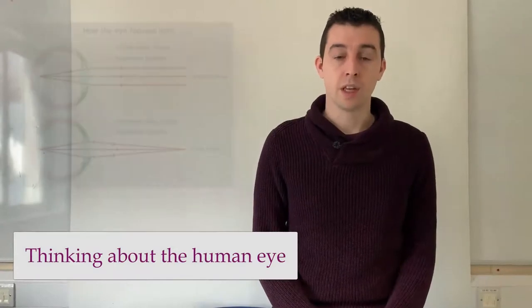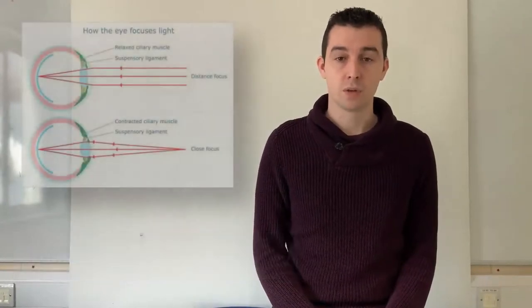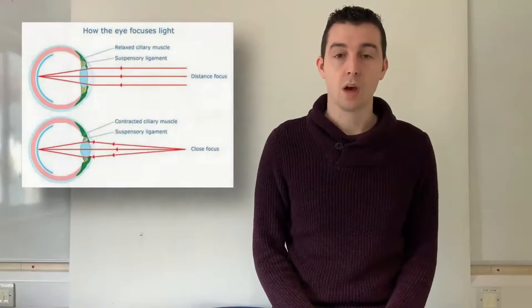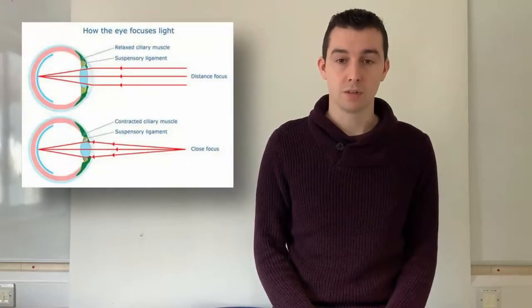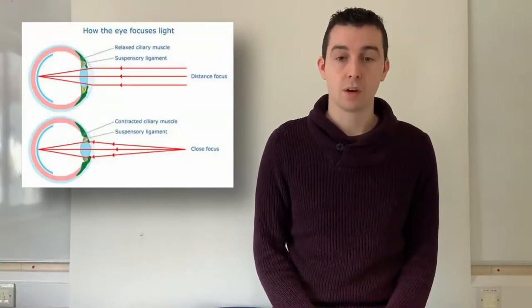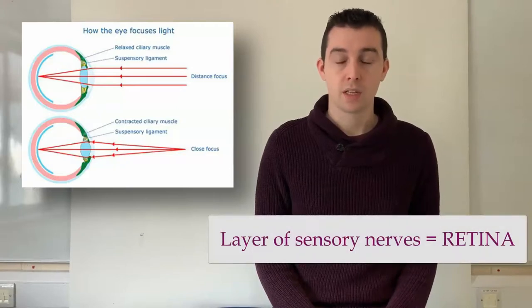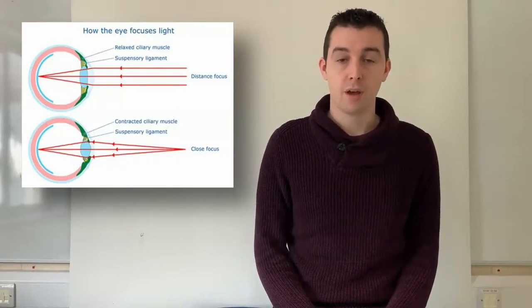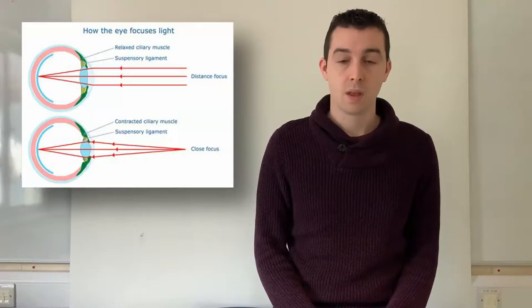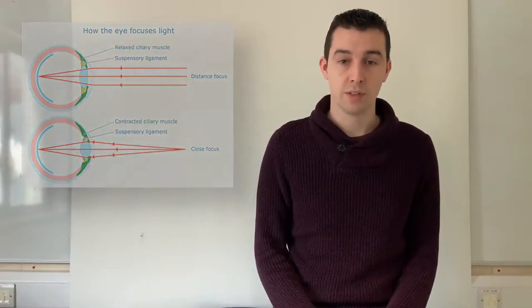Each of our eyes contains a convex lens which focuses the light coming into it onto the layer of sensory nerves at the back of the eye, called the retina. The retina sends these messages to the brain via the optic nerve. The brain converts these messages into images and this is how we see.